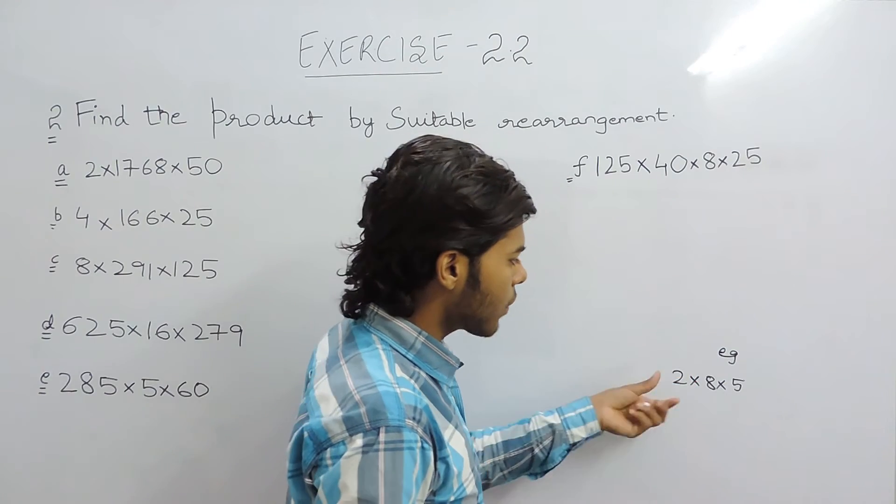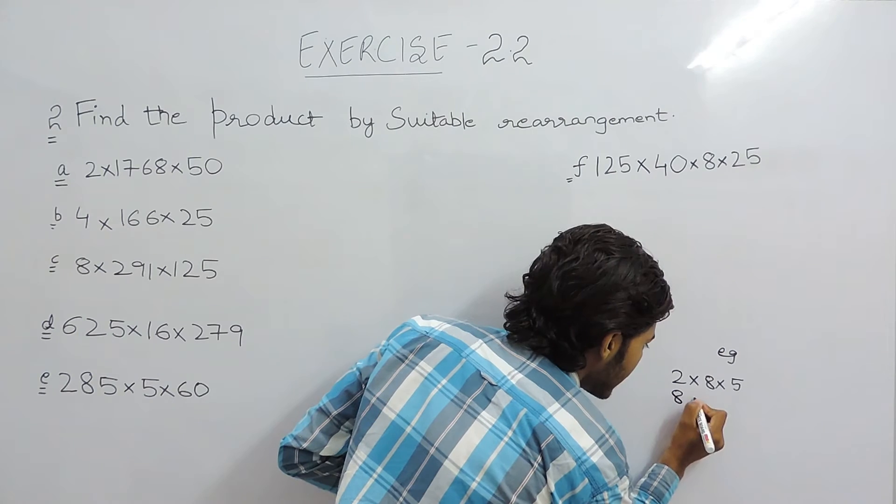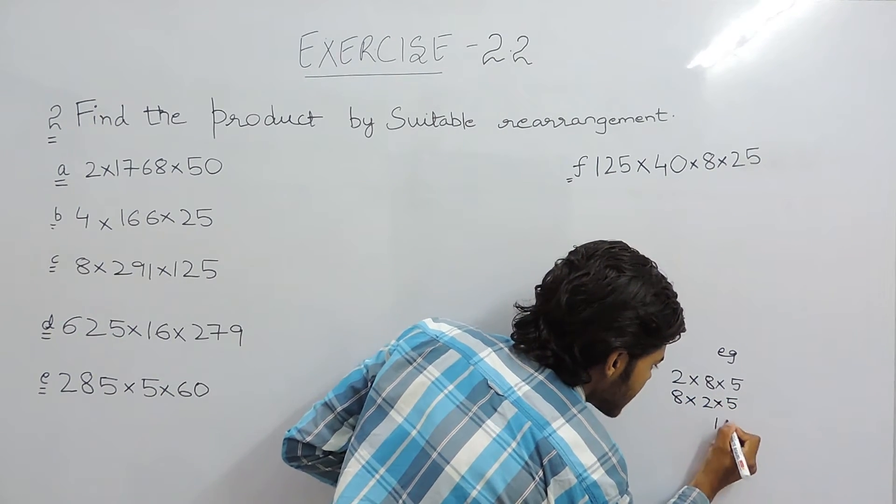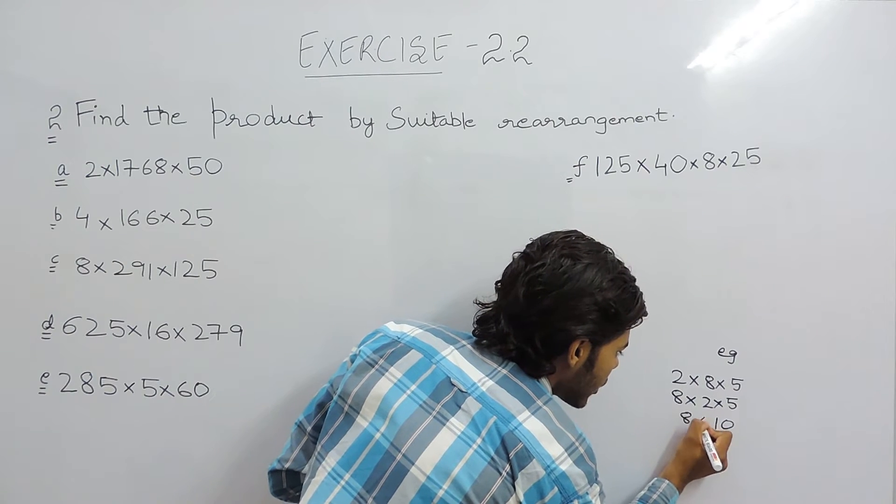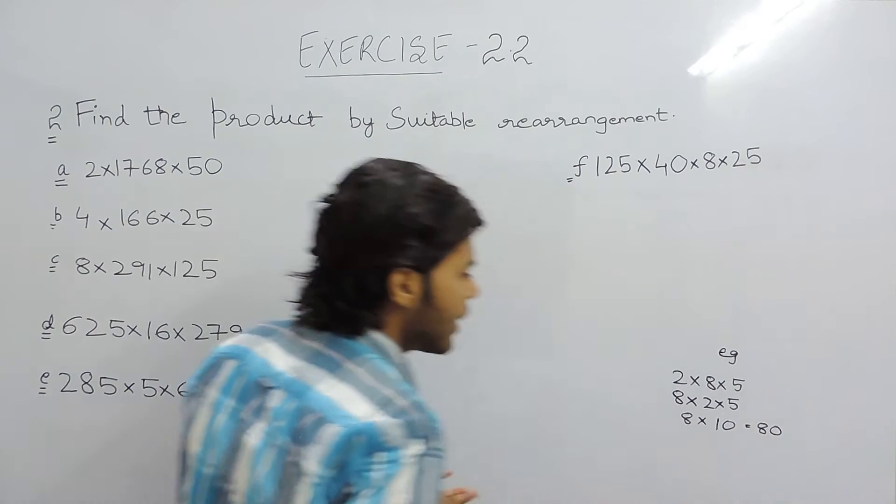So if we have to calculate these three numbers then we should write it like 8 into 2 into 5, which is 10. This means 8 into 10 which gives us 80. Therefore our calculation became easy.